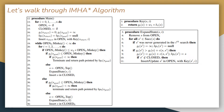Let's walk through the IMHA star algorithm. Before the procedure main, let's discuss procedure key and procedure expand state. There are two terms: W1 and W2, which are responsible for controlling the sub-optimality bound. W1 is used to inflate the heuristic values for each search, whereas W2 is used as a factor to prioritize the inadmissible searches over the anchor search — the anchor search being the consistent search. Procedure key defines the total cost: cost to come plus W1 times heuristic.